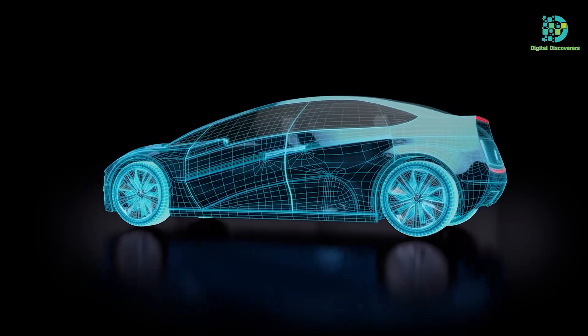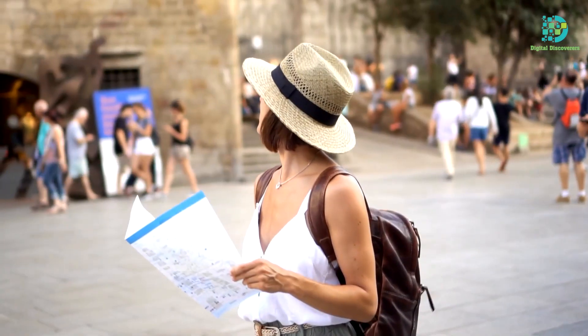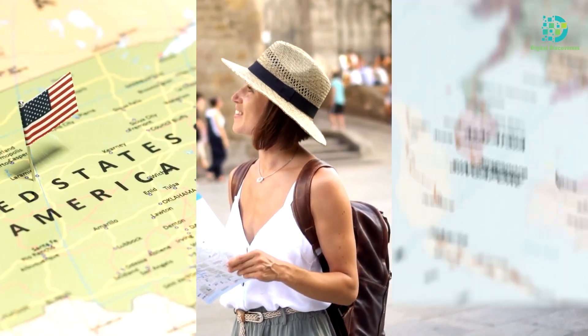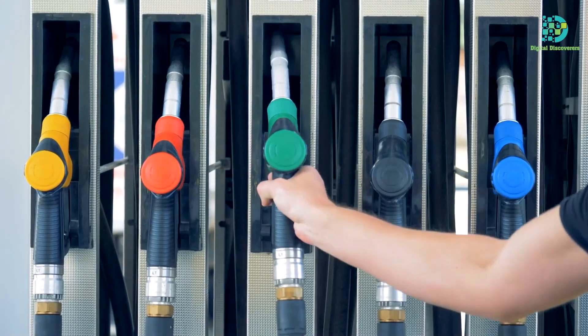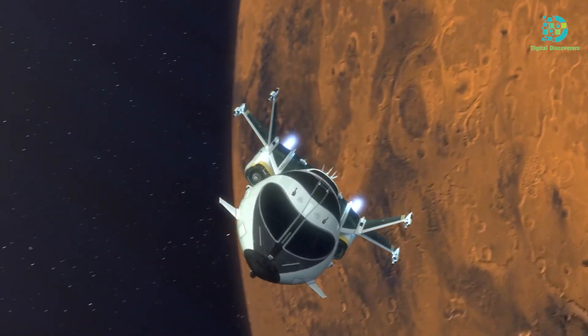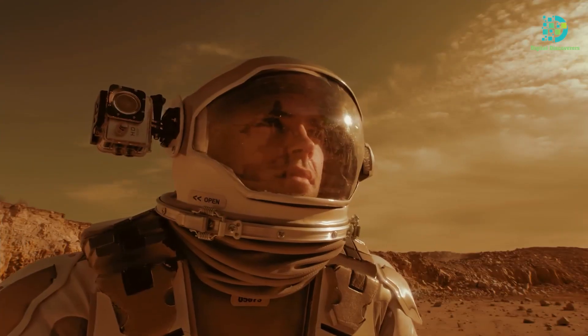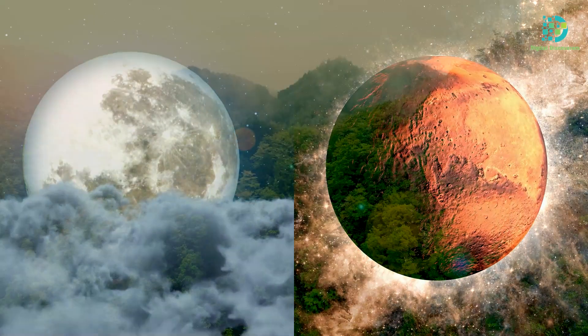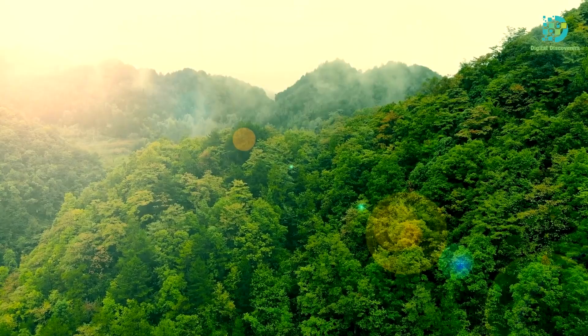At that time, the holiday destinations would be the Moon and Mars, not America or Singapore. By that time, such fuel will come which will make it possible to go to other planets with less fuel. Along with this, planets and satellites like the Moon and Mars will be built where there will be many facilities along with having trees and plants.